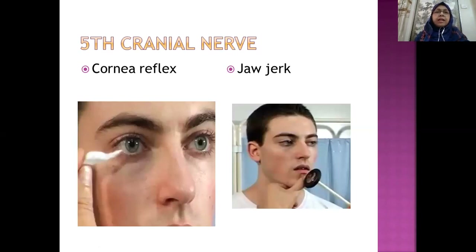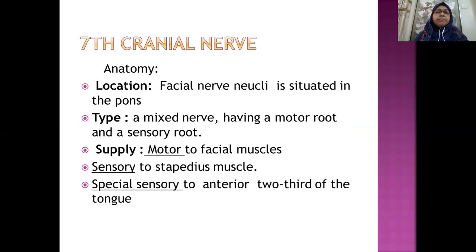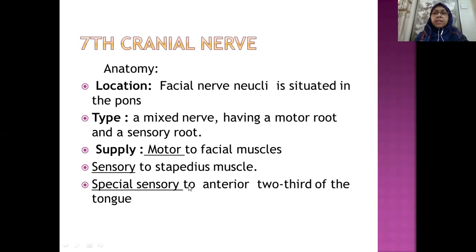Let us come to another important cranial nerve — the seventh cranial nerve. It is a mixed type of nerve having motor root and sensory root. It supplies the muscles of facial expression, sensory supply to the stapedius muscle, and special sensory supply to the anterior two-thirds of the tongue. This is the special sensation — different from the general sensation discussed for the fifth cranial nerve.